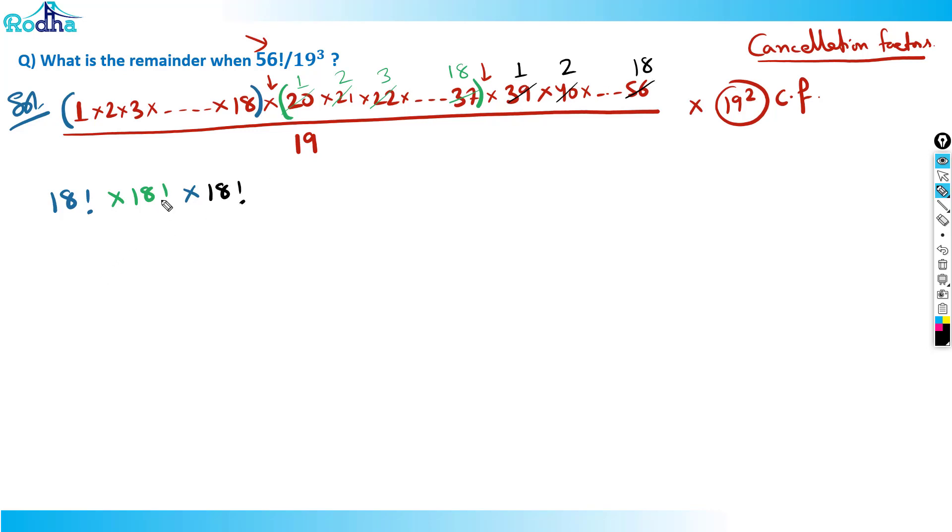But with one thing, this 38 was 2×19. This 19 I cancelled, but this 2 actually remained here. So this 2 will not go anywhere. It has to include a 2 also with it.